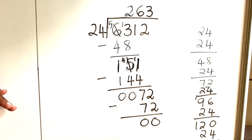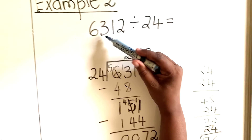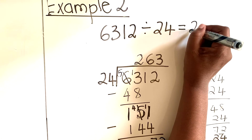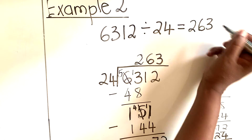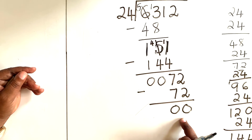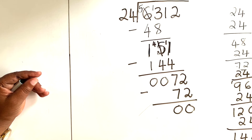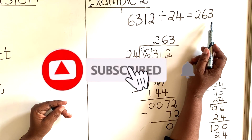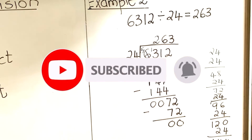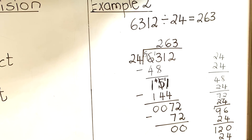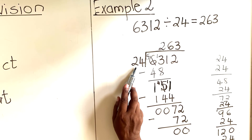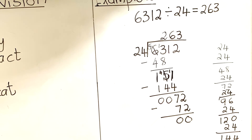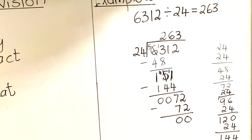Our answer: 6312 divided by 24 is 263. The remainder is 0, so it is exactly divisible. This is not easy — you really need to practice. Take numbers and divide them out, especially when the divisor is two or three digits. Use this method, write them down, and you'll be able to find the answer. This is the end — thank you for watching.